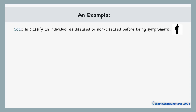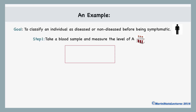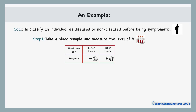Now consider developing a screening test. Our goal is to classify an individual as diseased or not diseased before the onset of any symptoms. We will take a blood sample and look at the level of something in the blood — let's call it blood level of A. If the blood level of A is high and above some threshold X, we'll screen them as positive for the disease. If it is below threshold X, we'll screen them as negative. After taking these measurements, we'll wait for many years and examine these same individuals to see who has and has not developed the disease of interest.